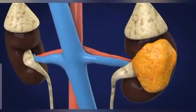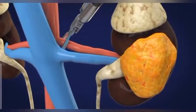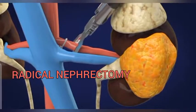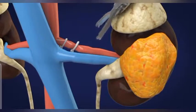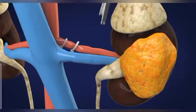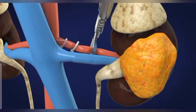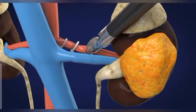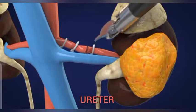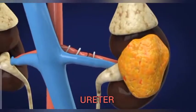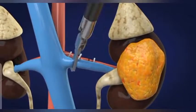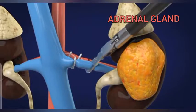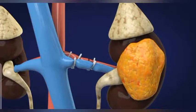The second type of nephrectomy is radical nephrectomy. In radical nephrectomy, a surgeon removes the entire kidney, the fatty tissues surrounding the kidney, and a portion of the ureter — a tube connecting the kidney to the bladder. The surgeon may also remove the adrenal gland that sits atop the kidney if a tumor is close to or involves the adrenal glands.